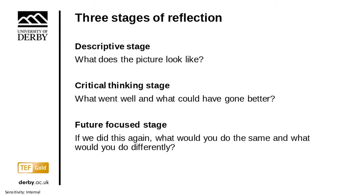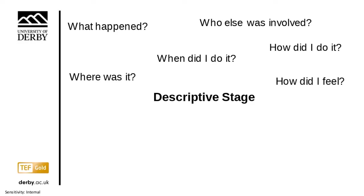To look at these stages in more detail — the descriptive stage. Here you describe the event. It can be basic or more complex; you can go into more or less detail depending on the event. But the more detail you describe it in, the more you can think about it from different angles. Some example questions: What happened? Who else was involved? Where was it? When did I do it? How did I do it? How did I feel? These classic questions — what, where, who, when, how — can really help you bring a much richer detail to your description.